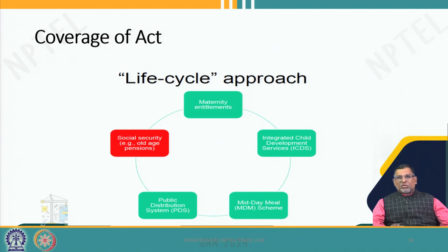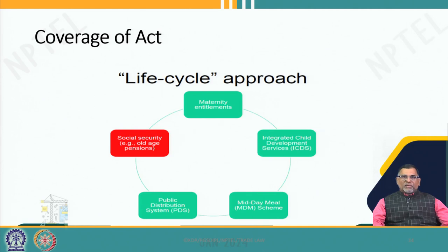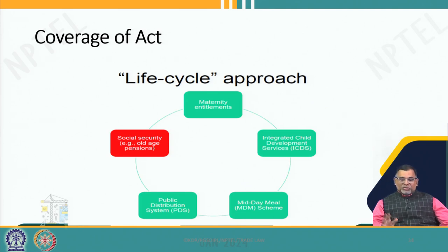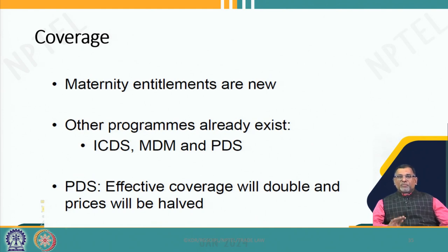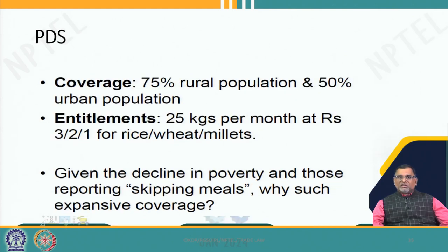There is a life cycle coverage under the act including maternity benefits, integrated child development services, mid-day meal, and the public distribution system. Two or three of these are especially connected with the public distribution system — mid-day meal, integrated child development services — and subsidized food is given through these channels. There is also distribution of food to pregnant women through programs like ICDS, MDM and the PDS systems. The largest coverage is through the public distribution system.